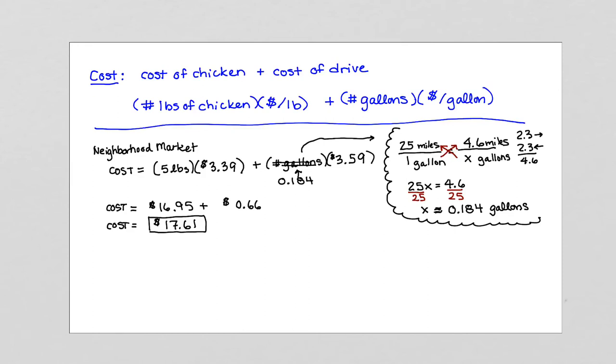Now we want to compare that to the cost of traveling across town to the other market. To travel to the across town market, we have the following costs. First, we have the number of pounds of chicken, which remains at 5 pounds. But this time, the cost per pound is $3.09. We add to that the number of gallons of gas that we need. But, recall, we don't know how many gallons it's going to take to get across town, so we'll leave that blank right now. We'll do our little thought bubble and get a little calculation again.